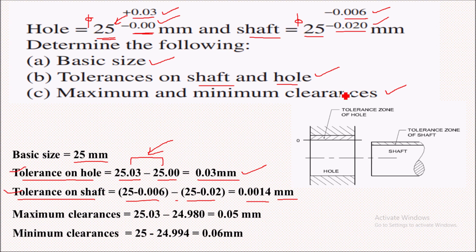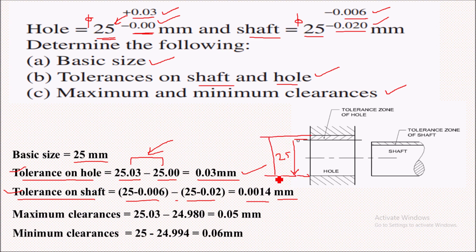Next we have to calculate maximum and minimum clearances. In the diagram, the minimum size of the hole is 25 mm and the maximum size of the hole is 25.03 mm. Similarly, for the shaft, the maximum value and minimum value can be seen on screen.